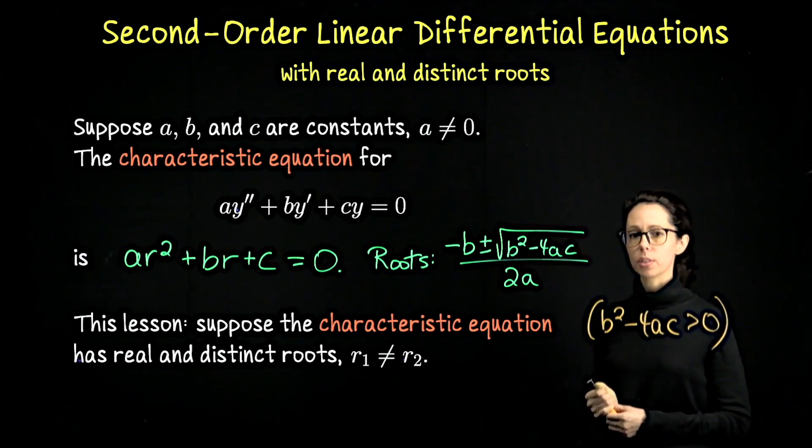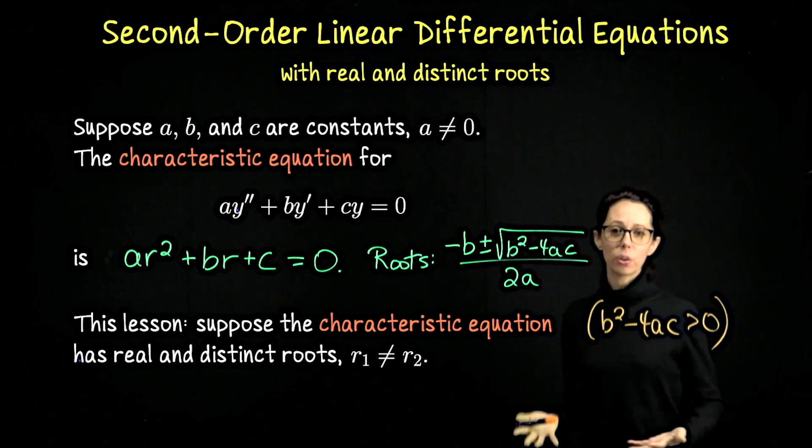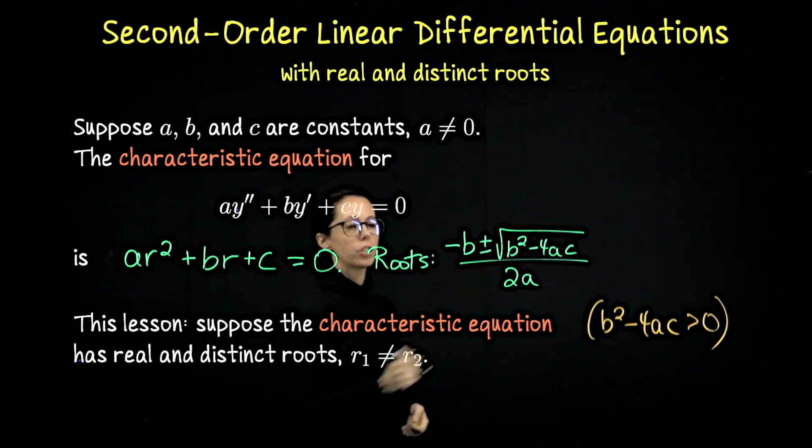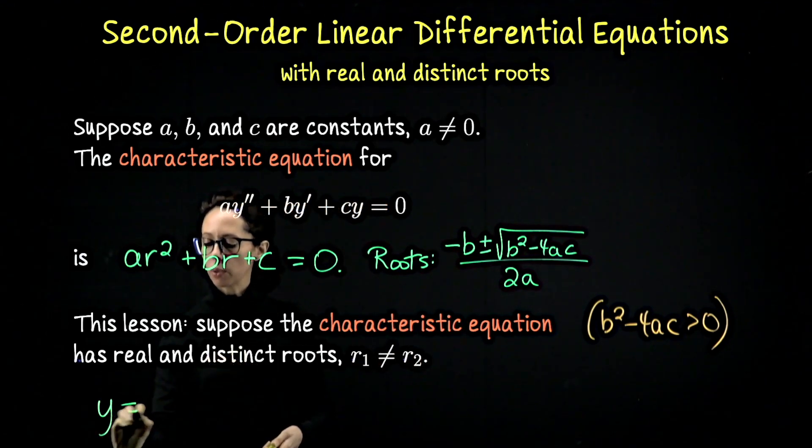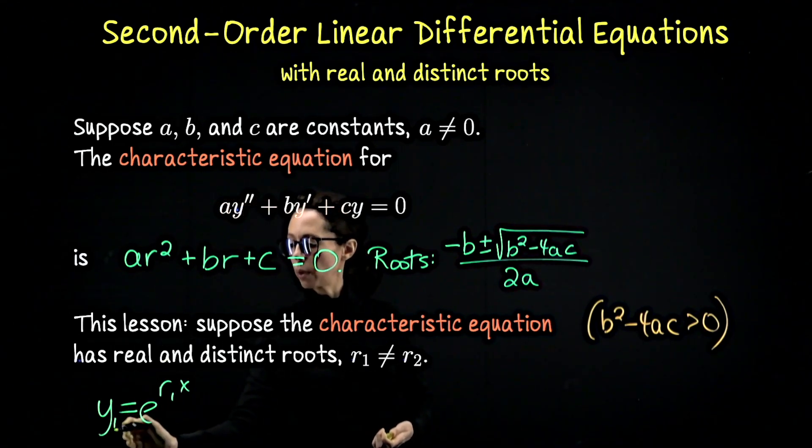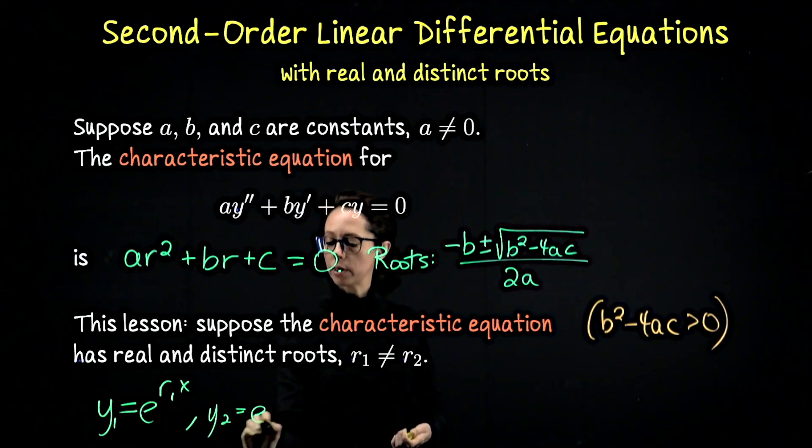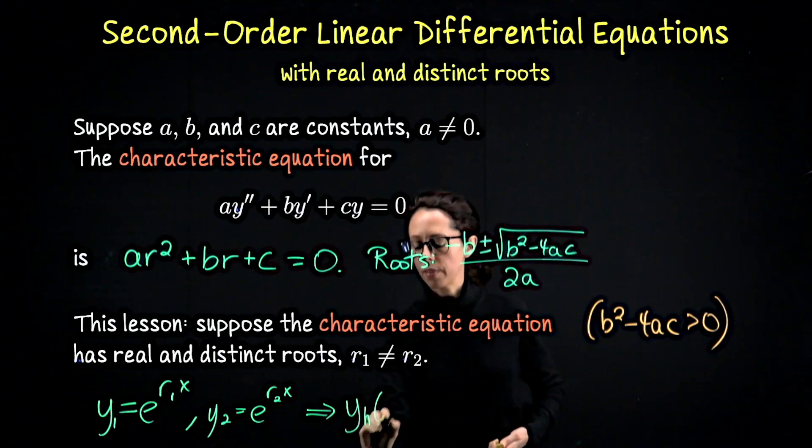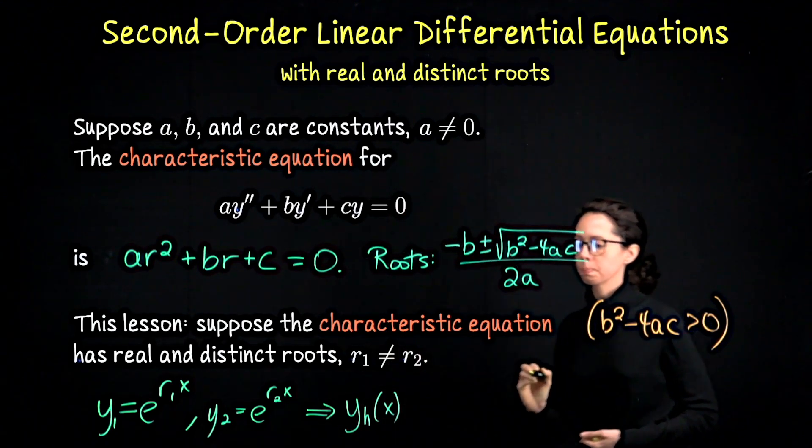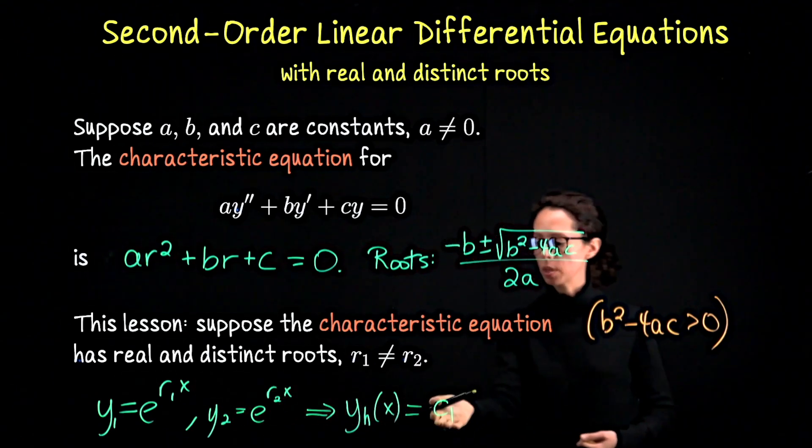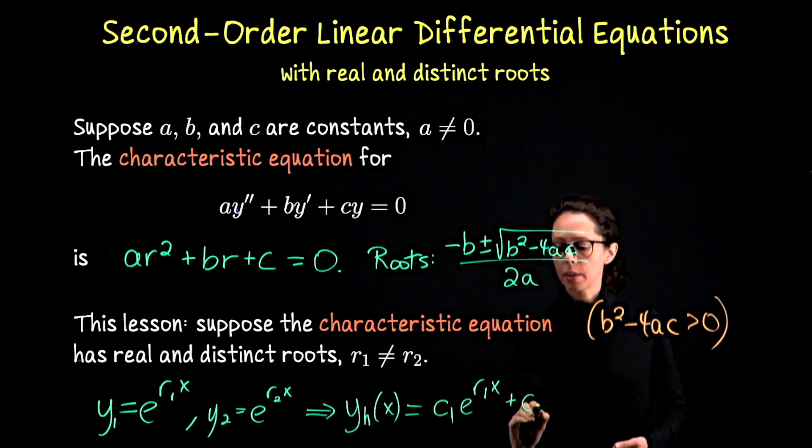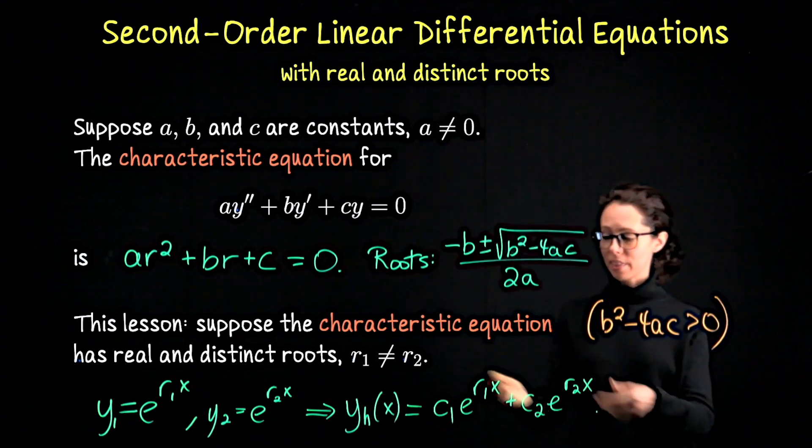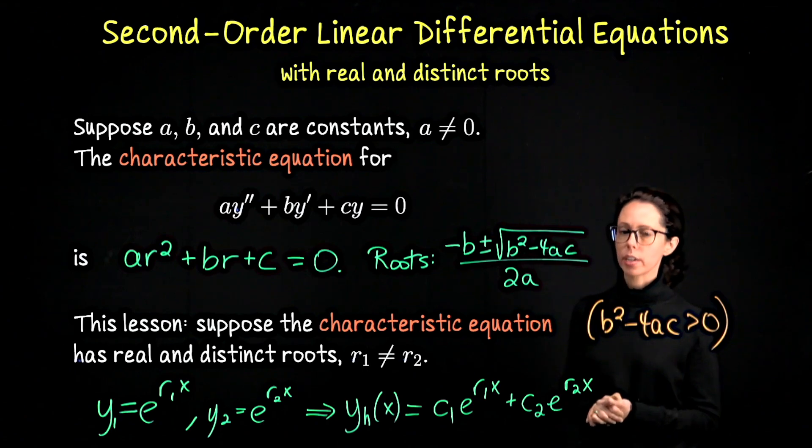In our video that introduced second order linear differential equations of this form, we actually concluded what the two building block solutions to our differential equation would have to look like. So notably, if r1 and r2 were the two values we get from this root computation, then we could say that y equals e to the r1x is a solution. Let me call that y1. y2 equals e to the r2x is also a solution, which means that the general solution to the homogeneous equation is a linear combination of these two. So some constant times the first one plus some constant times the second one. There's nothing else to really show because this is the form of the solution whenever the roots to your characteristic equation are real and distinct.